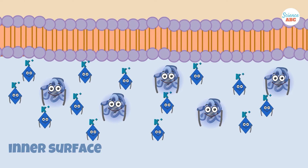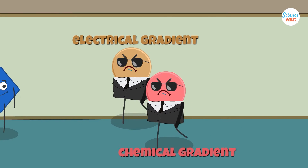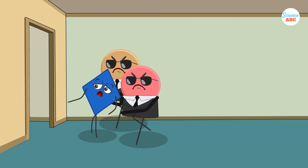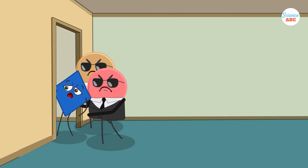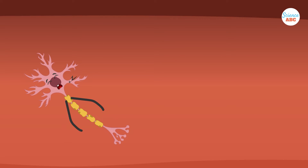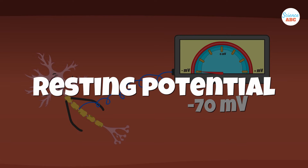Furthermore, there is a higher concentration of potassium ions inside, giving rise to a diffusion gradient that forces them to flow outside. Thus, there is both an electrical gradient and a chemical gradient — an electrochemical gradient — forcing ions from inside the cell to go out. Each neuron, when at rest, maintains a voltage difference arising from the electrochemical gradient, just as a battery maintains a certain voltage between its poles.